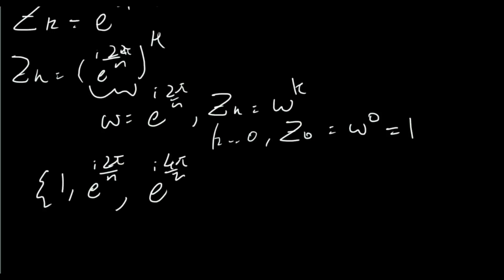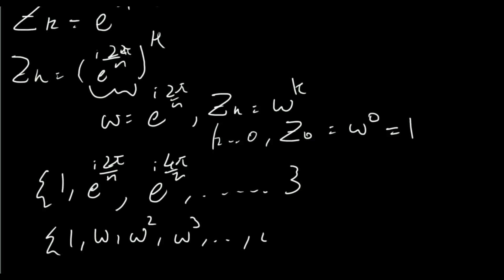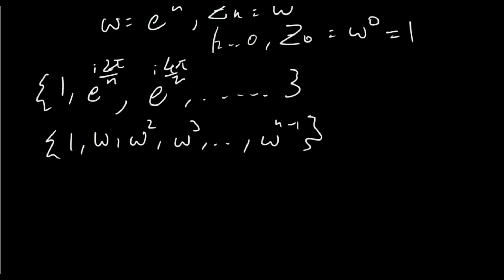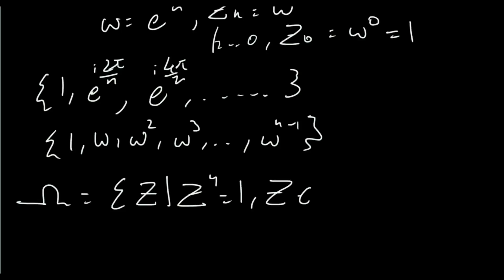This continues up to k equals n minus 1. We can write this in terms of omega as: 1, omega, omega squared, omega cubed, all the way up to omega to the n minus 1. This is our set of roots of unity. We can label it: big Omega equals the set of z such that z to the n equals 1 and z is complex. Our aim here is to prove that this set forms a group under multiplication.